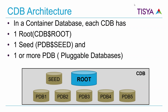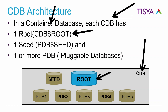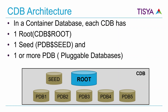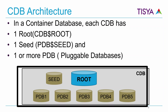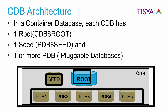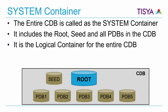When we create a container database as per the new multi-tenant architecture, it is made up of a single root database commonly referred to as CDB$ROOT, followed by a seed database, and one or more pluggable databases. From an Oracle terminology perspective, the entire CDB is called the system container, whereas the root, seed, and PDBs are all individual containers.